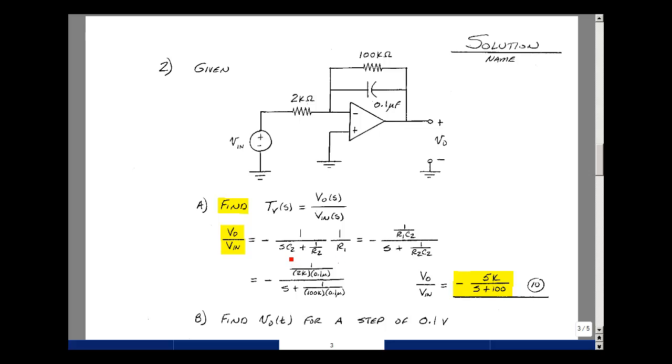Let's multiply the numerator and denominator by 1 over C2. So this term I'll put up in the numerator as 1 over R1C2. Multiplying by 1 over C2, I just get s, and then 1 over R2C2. I'm putting in the value for R1 of 2k, C2 of 0.1 microfarad, and for R2, 100k. That gives me minus 5k over s plus 100.